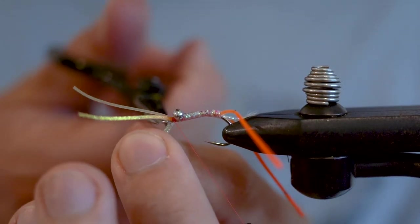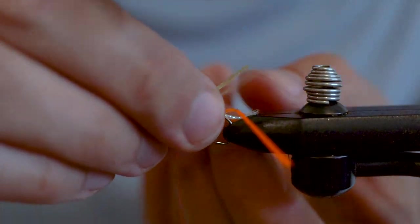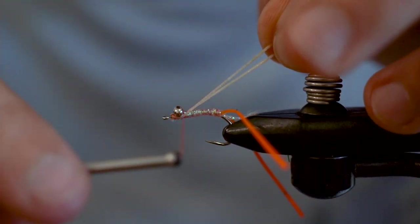Here you can also split your rubber legs, pull them backward, and then take a couple wraps behind your barbell to make sure that they have the proper orientation.